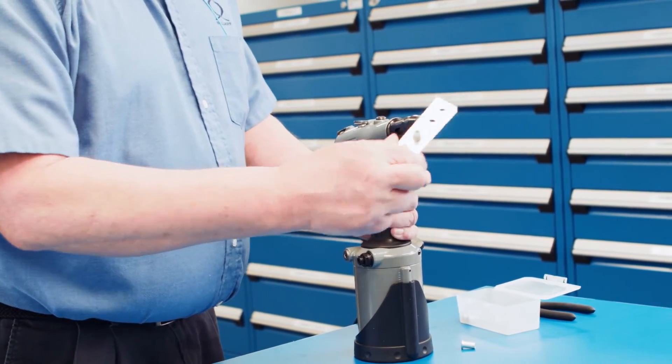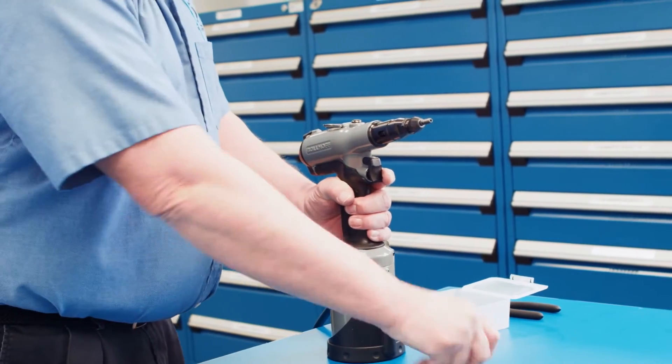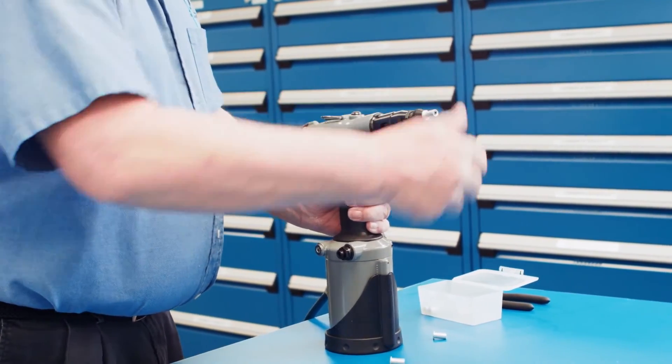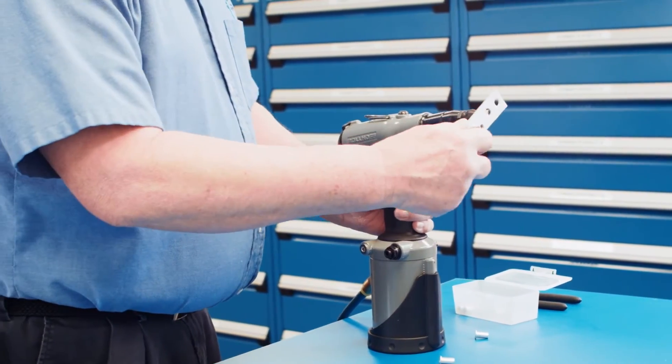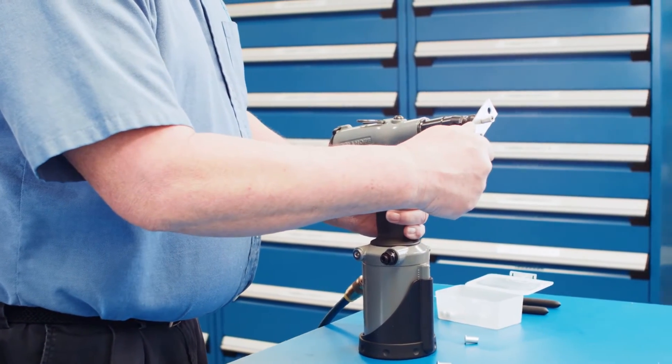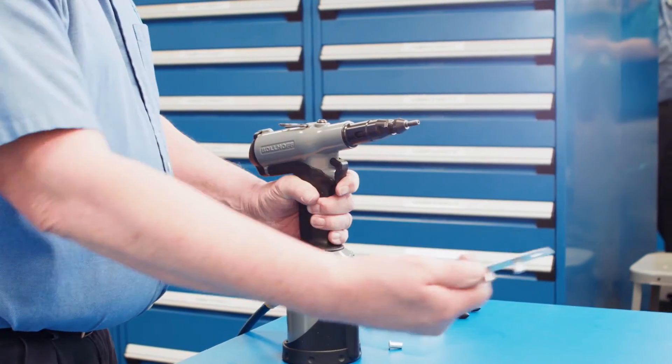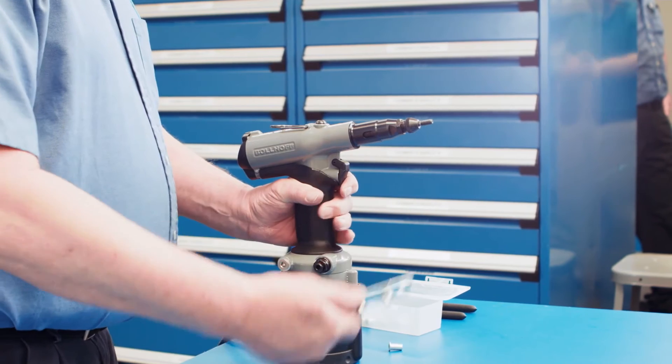Remember the P2007 has a single stage trigger. You only need to pull it once and hold it until the tool senses the part is set. Once the part is upset, the tool will automatically back out on its own while you are holding the trigger.